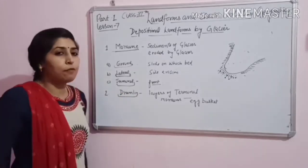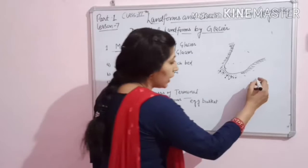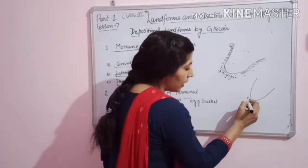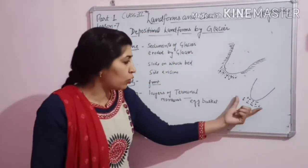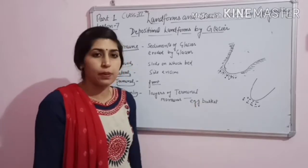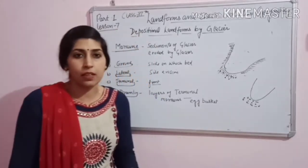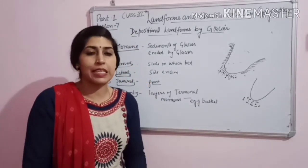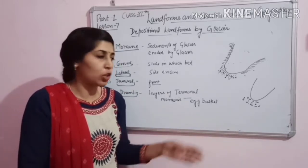Next depositional feature is drumlin. What is a drumlin? The glacier forms layers of terminal moraines. These layers of terminal moraines are different layers — they are called drumlins, or you can say egg-basket shape. Drumlins are layers of terminal moraines.